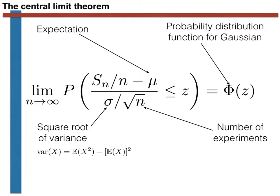Putting some flesh on this statement, the central limit theorem states the following. In the limit of an infinite number of experiments, the probability that Z is greater than Sn over n minus the expectation, all divided by the square root of the variance over the number of experiments, is equal to the value of the cumulative probability distribution function at Z for a normal distribution with mean 0 and variance 1. We use the letter capital Psi to represent this cumulative probability distribution function for the normal distribution with mean 0 and variance 1.